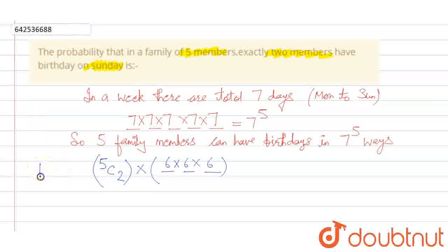Probability would be equal to this case divided by total cases that is 7 to the power 5. So probability becomes 5C2 is 10 into 6 cube divided by 7 to the power 5.